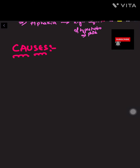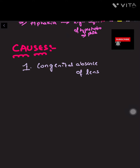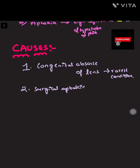In this video we are going to discuss the causes of aphakia. The first cause is congenital absence of lens, which is the rarest condition. Next is surgical aphakia — surgical aphakia is removal of the lens in surgeries like cataract, and this is the commonest presentation.